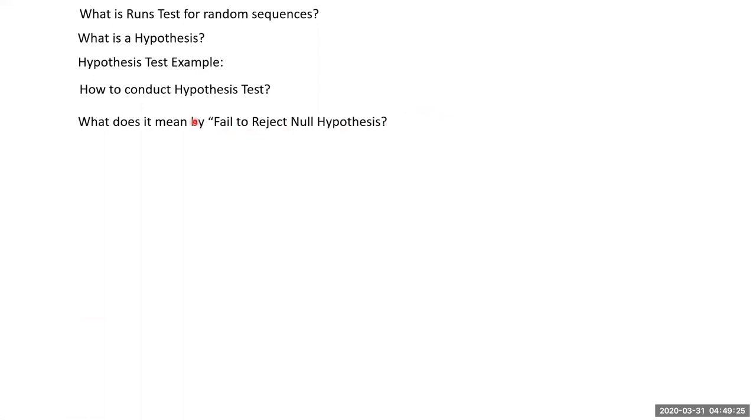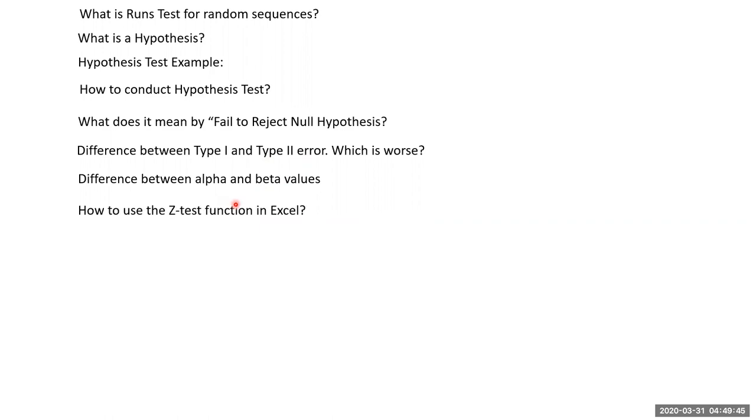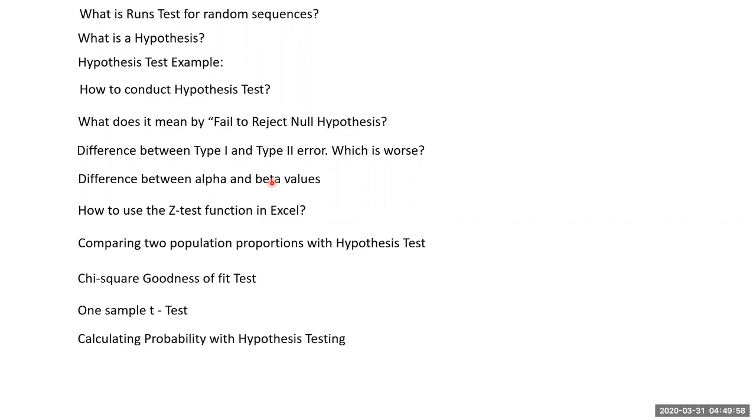And these are all the things we will see in the future videos: hypothesis test examples, how to conduct hypothesis tests, what it means to fail to reject null hypothesis, difference between type 1 and type 2 error, difference between alpha and beta values, z test function in Excel, comparing two population proportions, chi-square goodness of fit test, one sample t test, and probability using hypothesis testing.